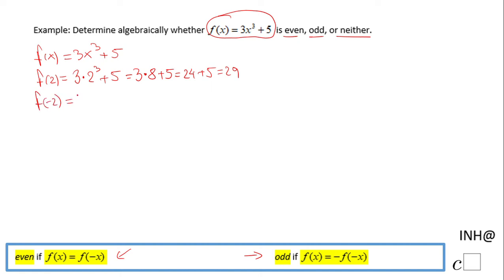Let's do f(-2), the opposite of 2. We have f(-2) = 3(-2)³ + 5 = 3(-8) + 5 = -24 + 5 = -19.